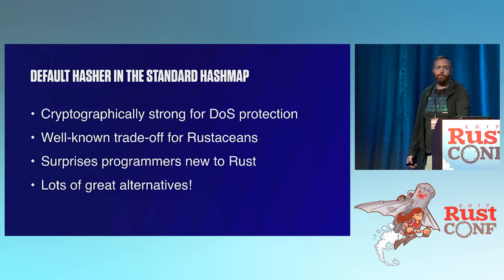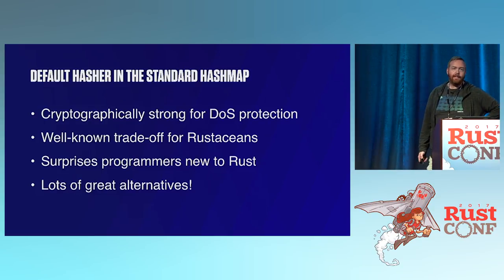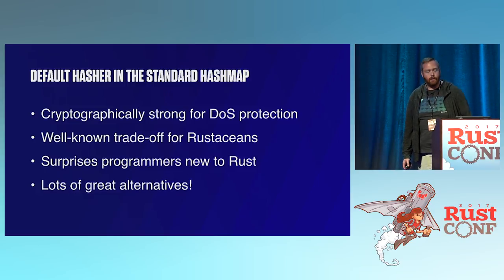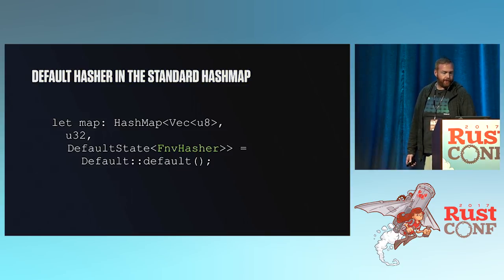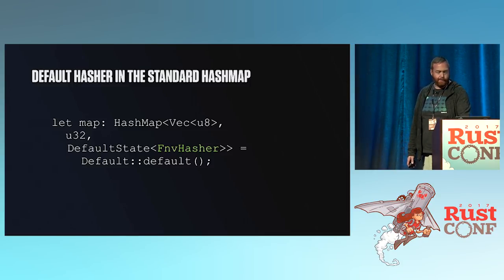Something that most people in this room are familiar with is that the default hasher is cryptographically strong, so it can be a little slow. It's a well-known trade-off for experienced Rust programmers but really surprising to newcomers. The nice thing is there are lots of great alternatives. Here's an example using a different hasher — an FNV hash — that's a little bit faster. There are good pages with Rust-specific benchmarks for these different hashers.